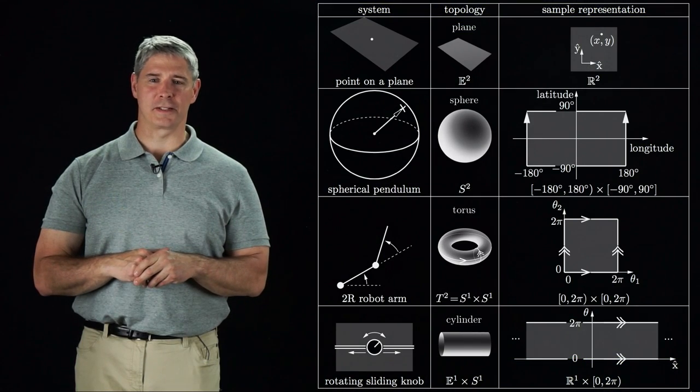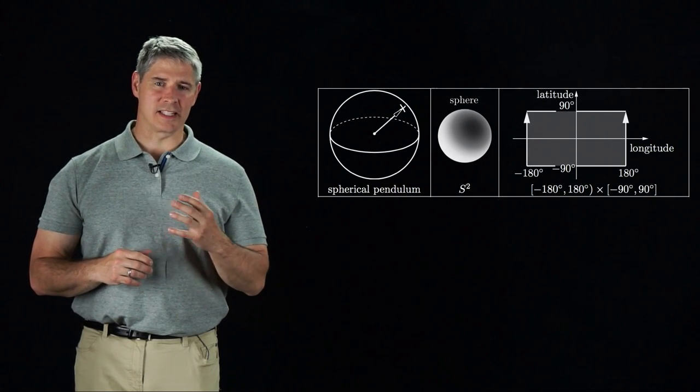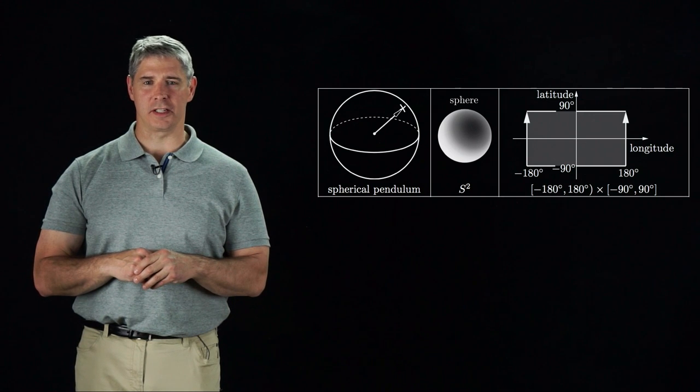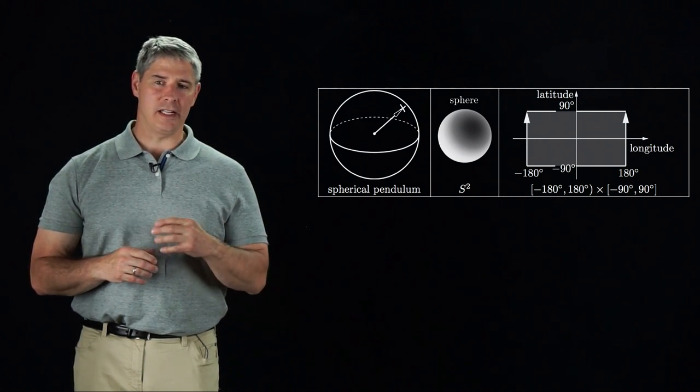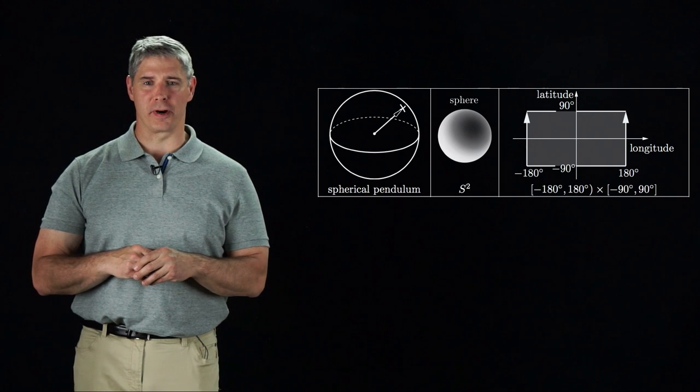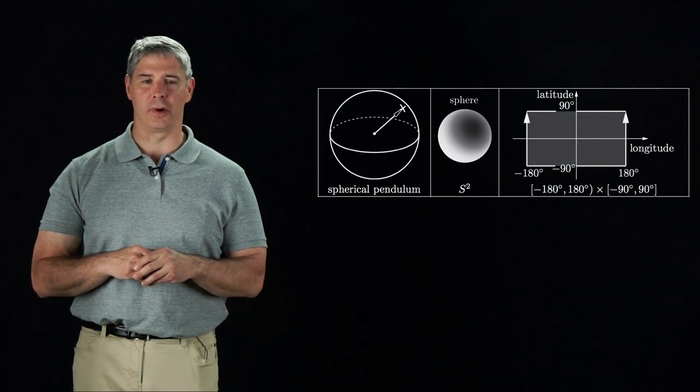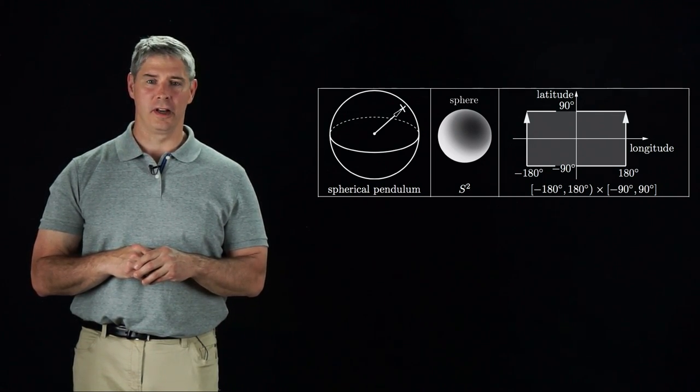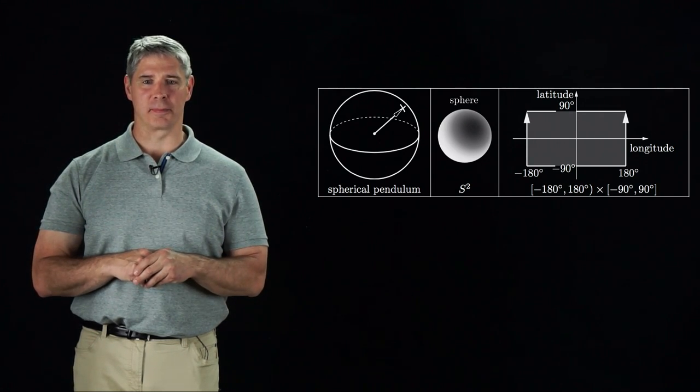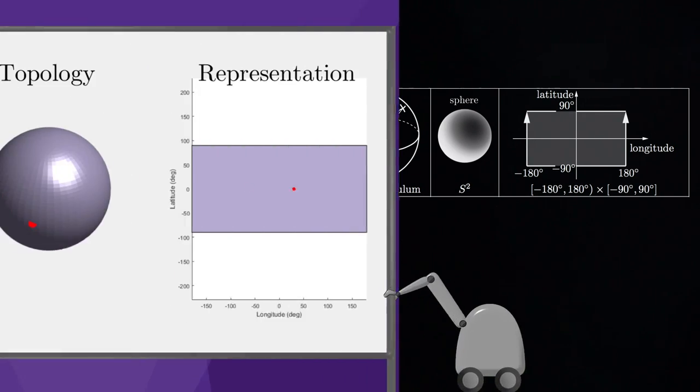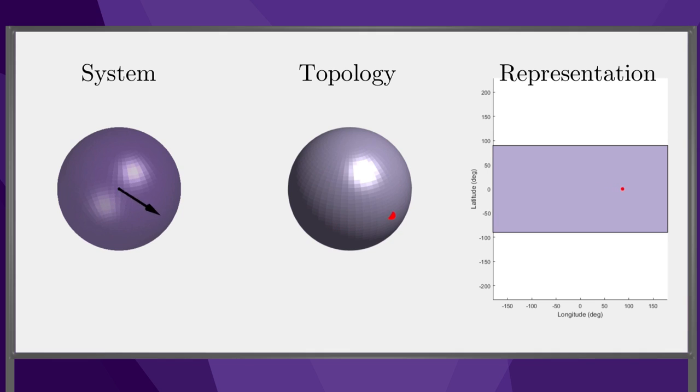Finally, let's look at the spherical pendulum. It has a spherical C-space, and we can see its representation as a subset of the plane. Each of the points on the top line segment of the representation correspond to the same point, the north pole of the sphere, and each of the points on the bottom line segment correspond to the south pole. This video shows the changing representation as the spherical pendulum moves.